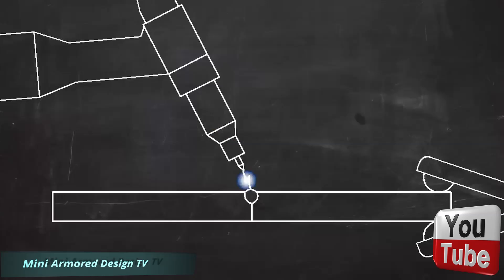TIG works by melting the base metal—that is, the metal that makes up the two pieces that are to be joined. The heat is generated by an electric arc that forms between the base metal and the tungsten electrode.